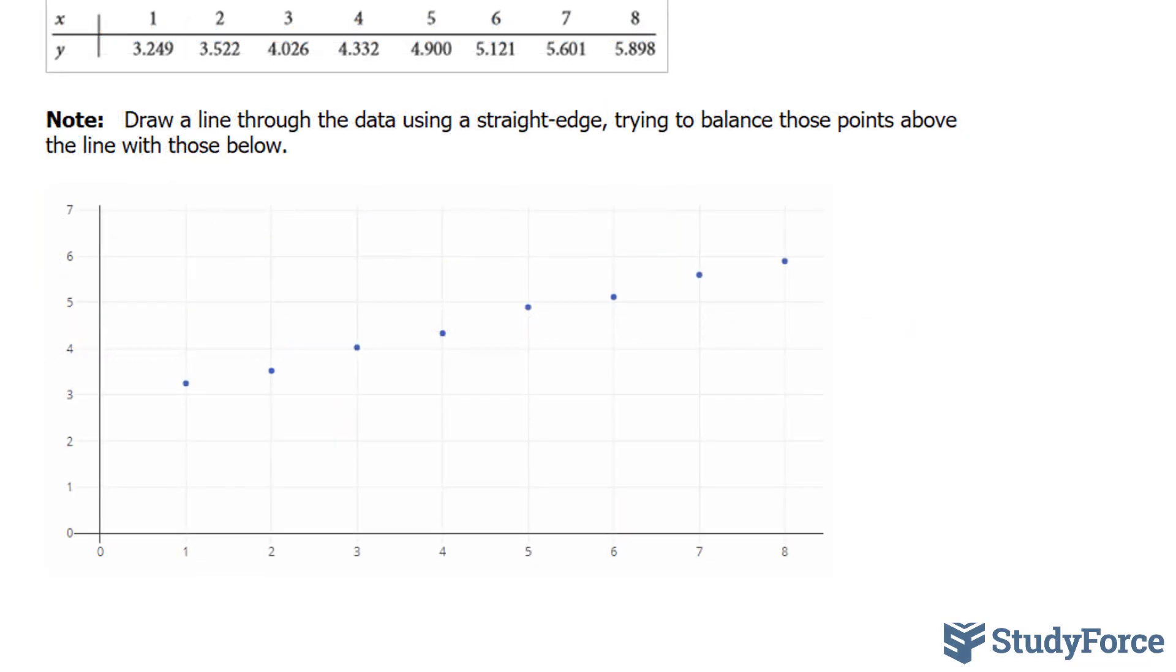The next thing you want to do is draw a line through the data using a straight edge. You have to try to balance those points above the line with those below. So let's go ahead and try that out. I should get an equal amount above and an equal amount below.